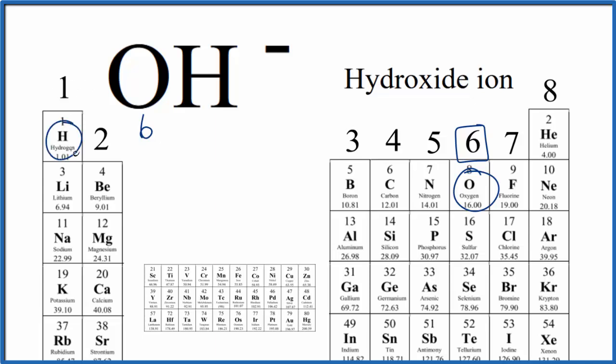Hydrogen is in group 1. It has one valence electron.